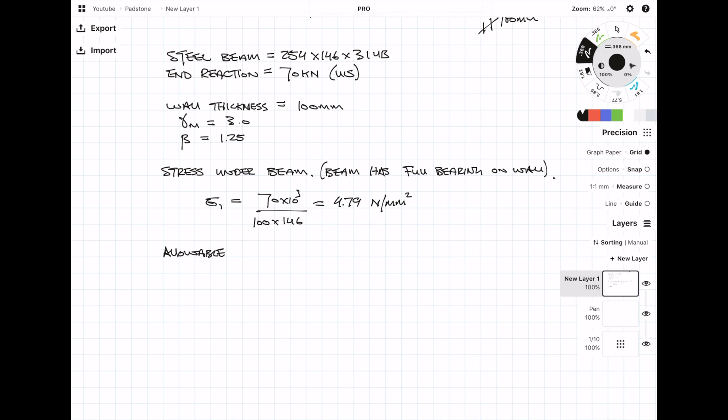So now we need to check this value against the resistance or allowable bearing stress. To calculate this you multiply the bearing factor with the characteristic strength of the masonry divided by the material safety factor. Plug these values in and we get an allowable bearing stress of 1.61 newtons per millimetre squared. Because this allowable bearing stress is less than our applied stress, that means we need to spread the load using a padstone.